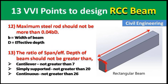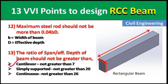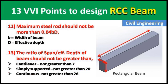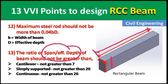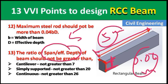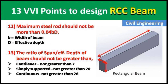Point 13: The ratio of span to effective depth of the beam should not exceed certain limits depending on beam type: for a cantilever beam it should not be greater than 7; for a simply supported beam, not greater than 20; and for a continuous beam, not greater than 26. For example, if the span is 5 m and the effective depth is 0.06 m, divide 5 by 0.06 and check it against 7, 20, or 26 respectively.